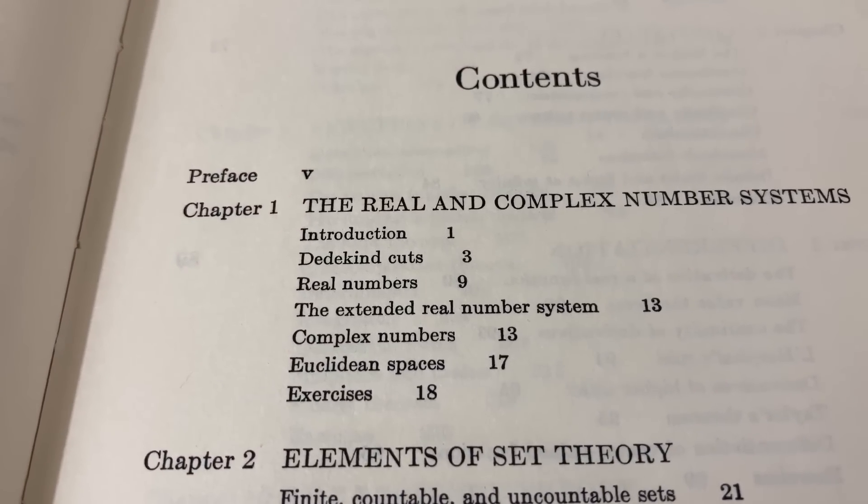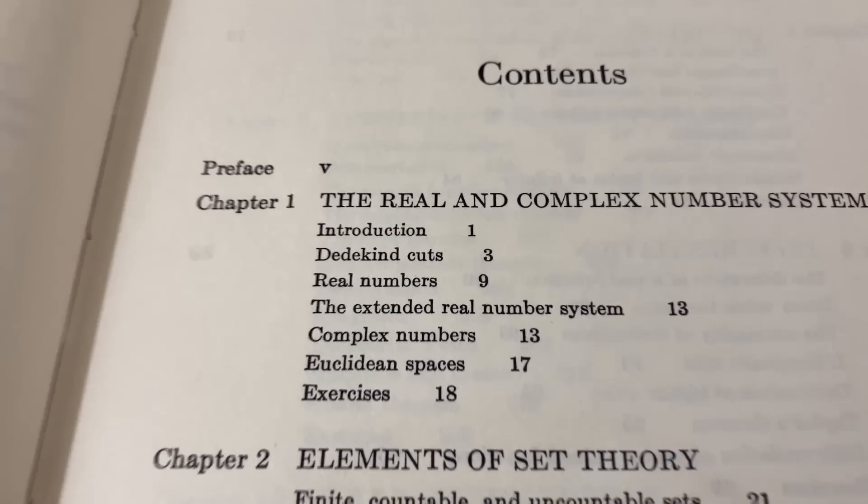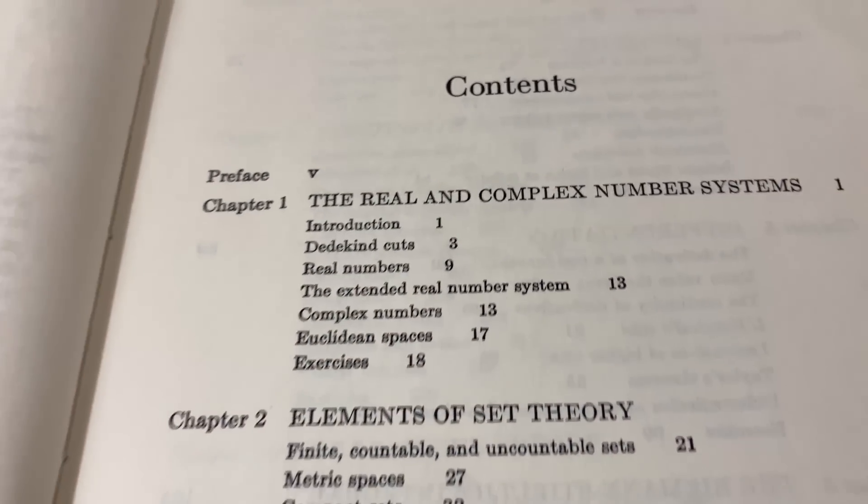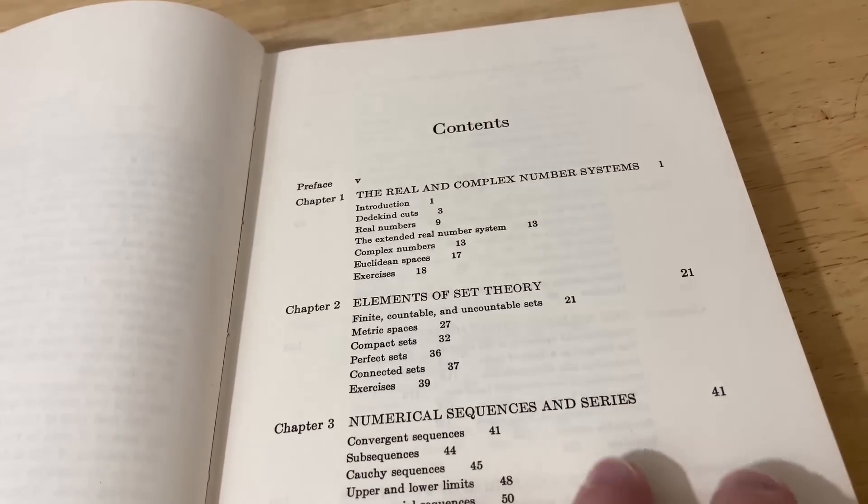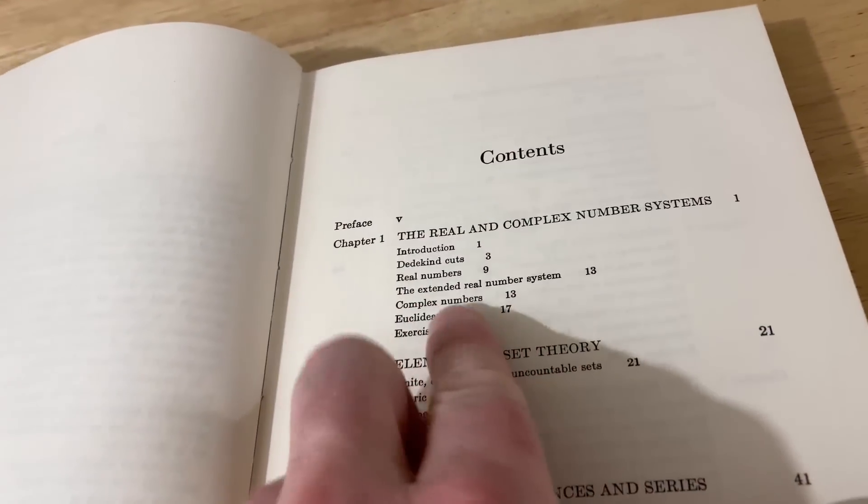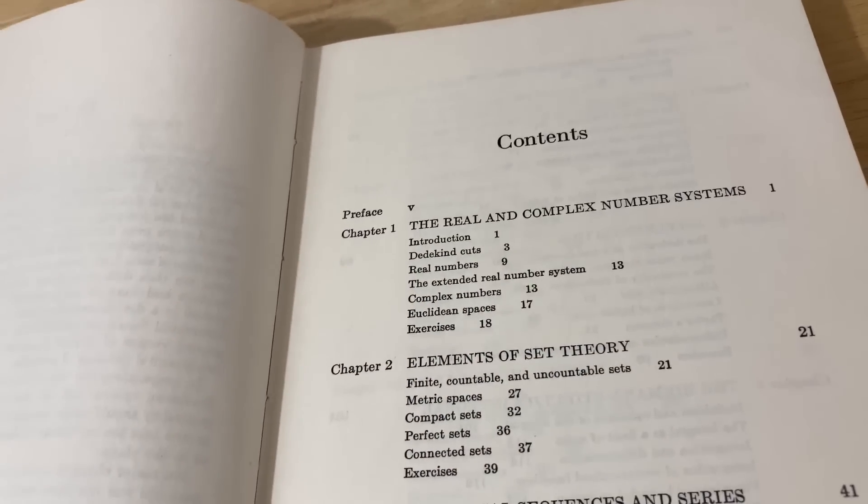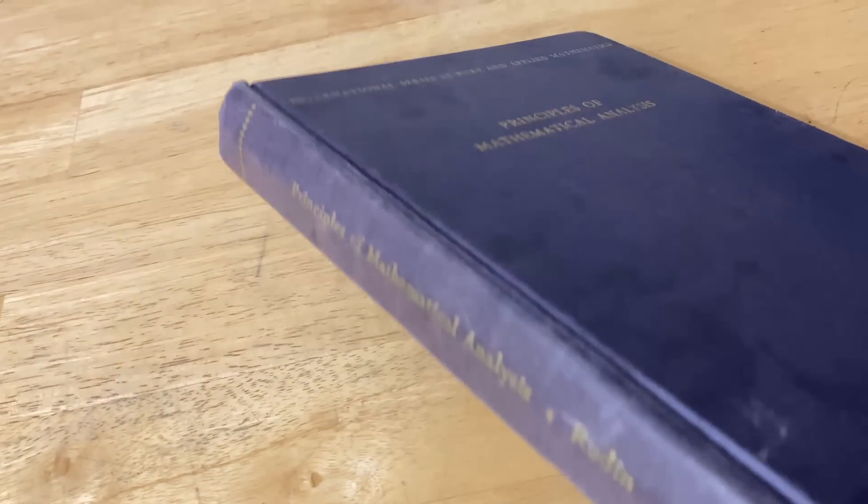I should mention that I think that the section on Dedekind Cuts is in the appendix on the newer versions of this book. I'm not positive. If I'm wrong please correct me. But I believe this is in the appendix on newer editions. This is an older edition of the text.